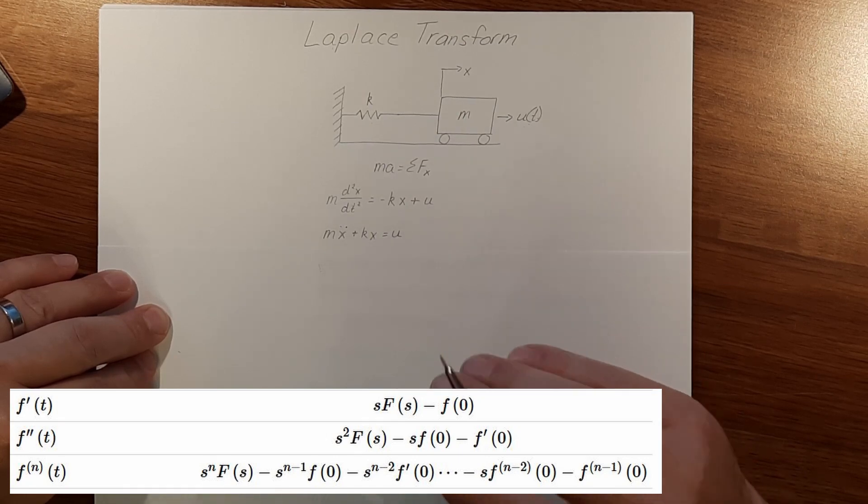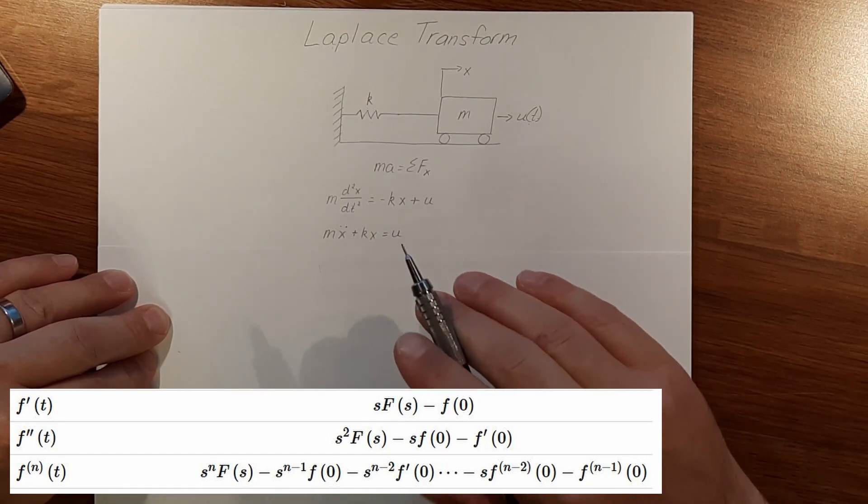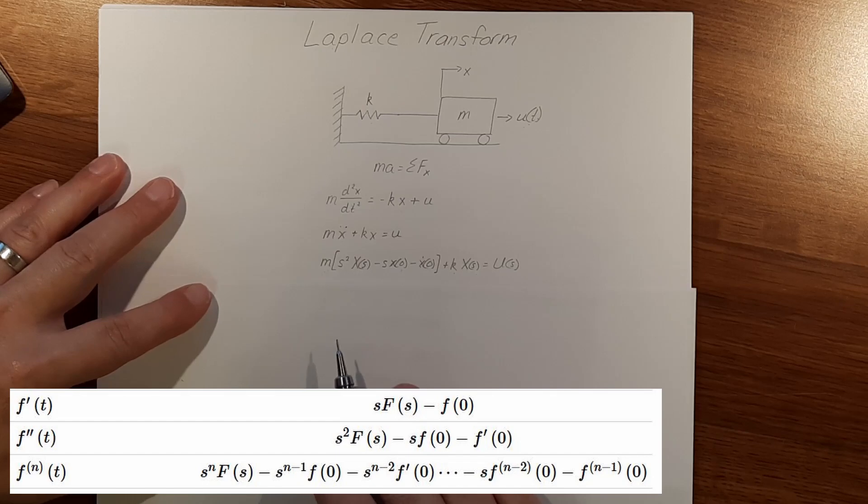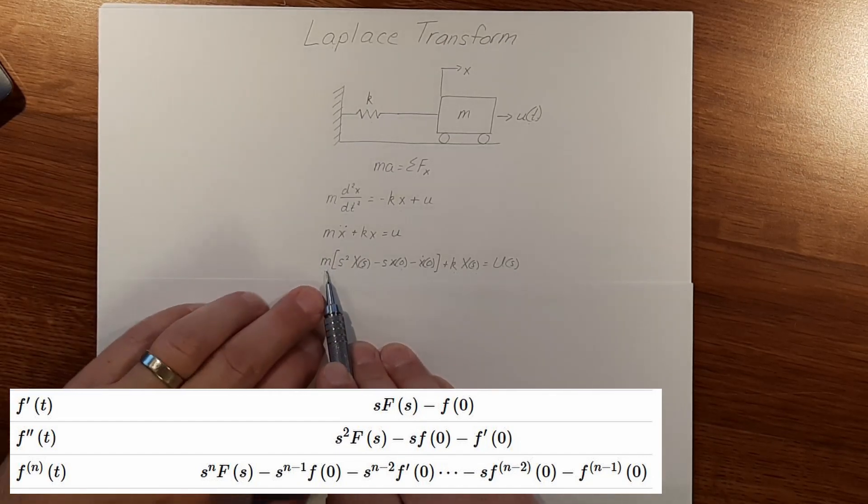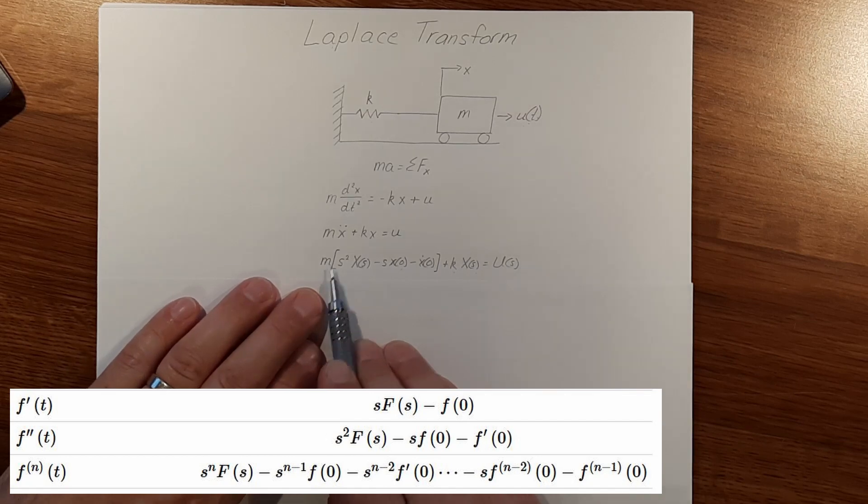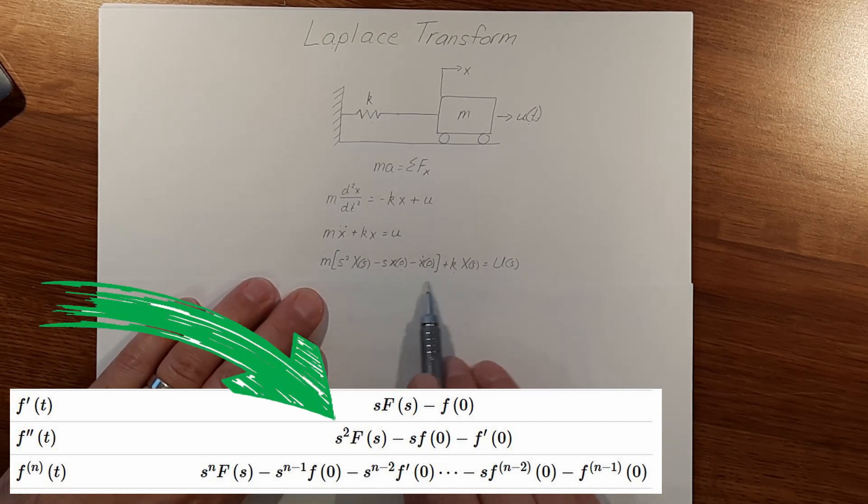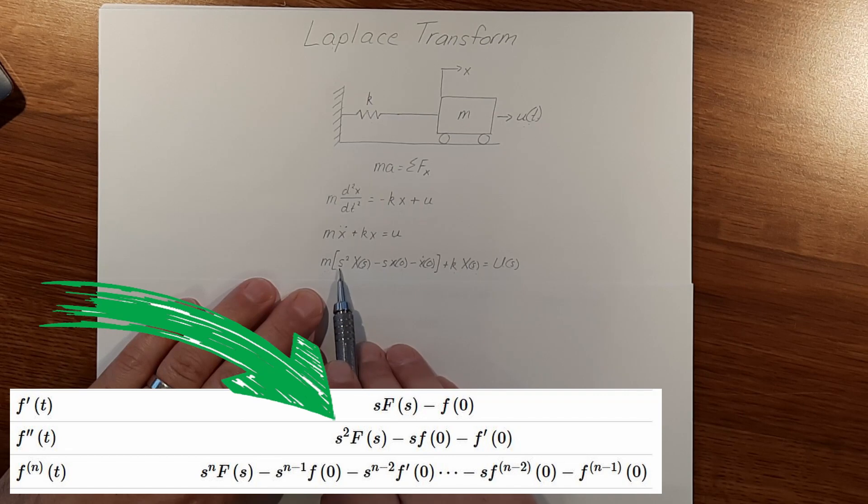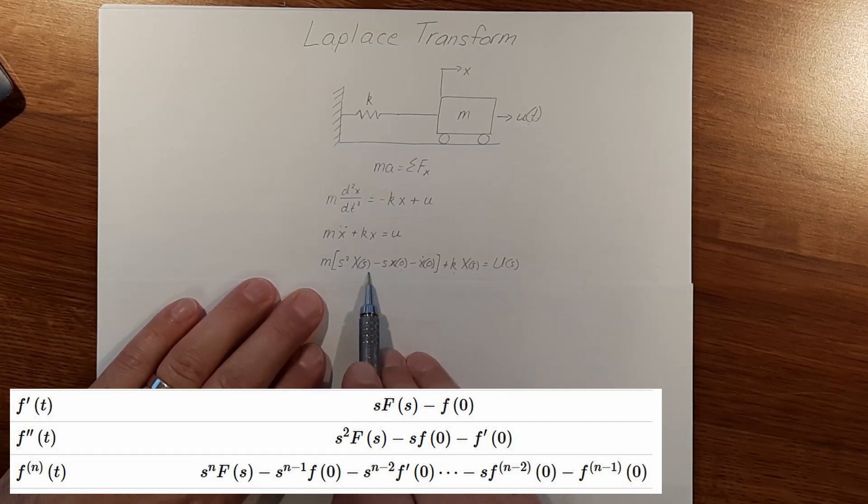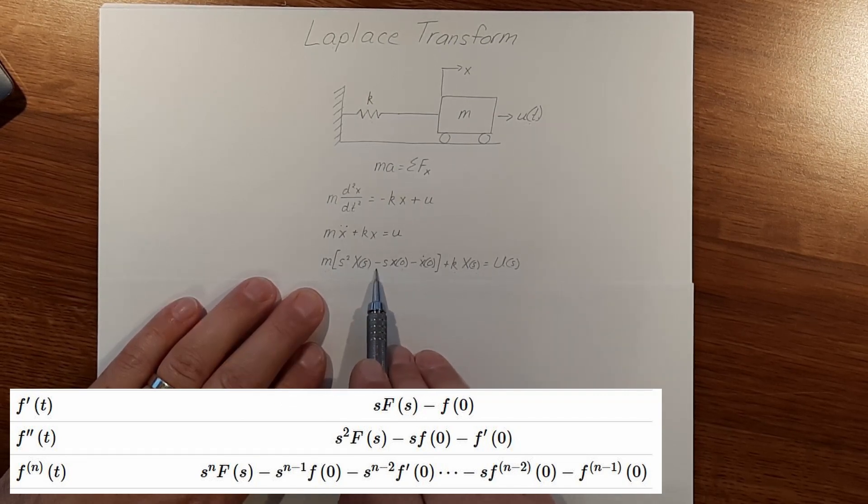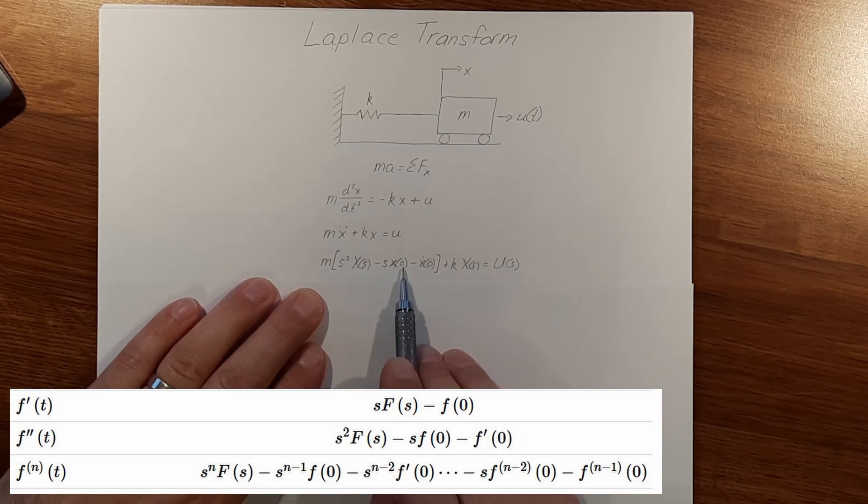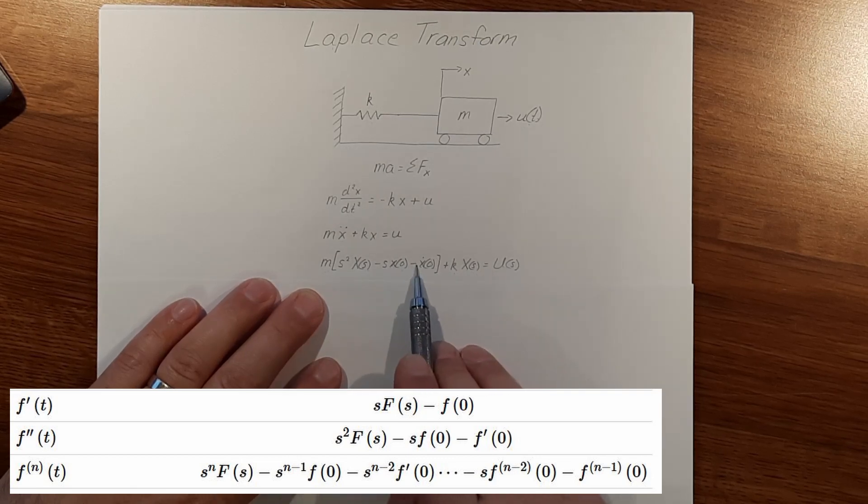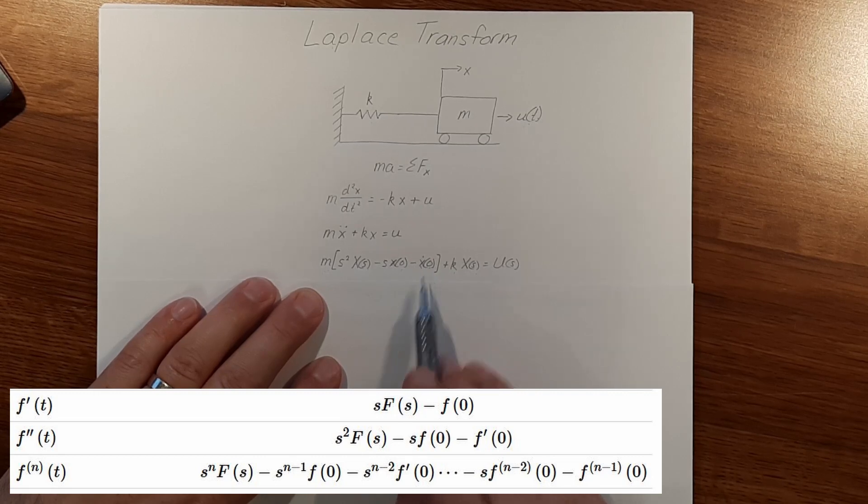Using these equations, mass is going to stay the same because it's a constant. Our x double dot is going to turn into what is in the brackets here: s squared times big X of s minus s times little x of zero minus x dot of zero.